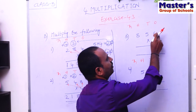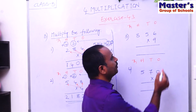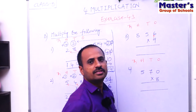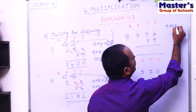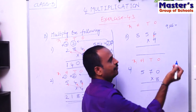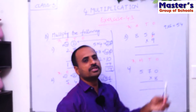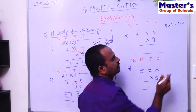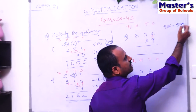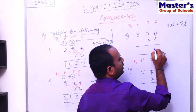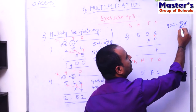Start multiplication from ones place. The digit in ones place is 6, so multiply 6 with 9 — that is 9 × 6. Children, 9 sixes are 54, and 54 is a two-digit number. Write the second digit 4 under ones place and carry the first digit 5 to the tens place.